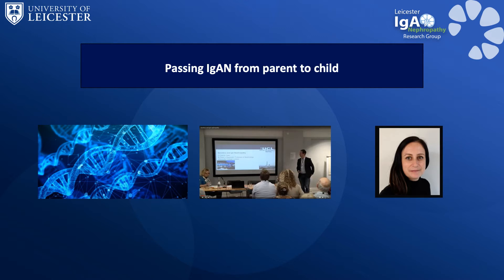One commonly asked question is: can I pass IgA nephropathy to my children? I want to signpost you to a talk by Danny Gale which deals with the genetics behind IgA nephropathy — he gave this talk at our Patient Information Day in London a couple of years ago. The short answer is IgA nephropathy very rarely runs in families, and so for most patients it is very unlikely that you will pass it to your children.